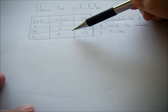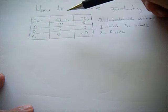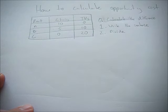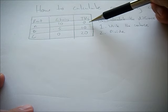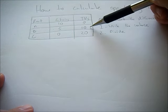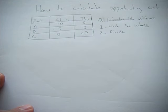If you're given a PPF or a table that looks like this, you have different points or different types of production per hour. Here you can produce 10 chairs or 0 TVs, 5 chairs or 10 TVs, or 0 chairs or 20 TVs.